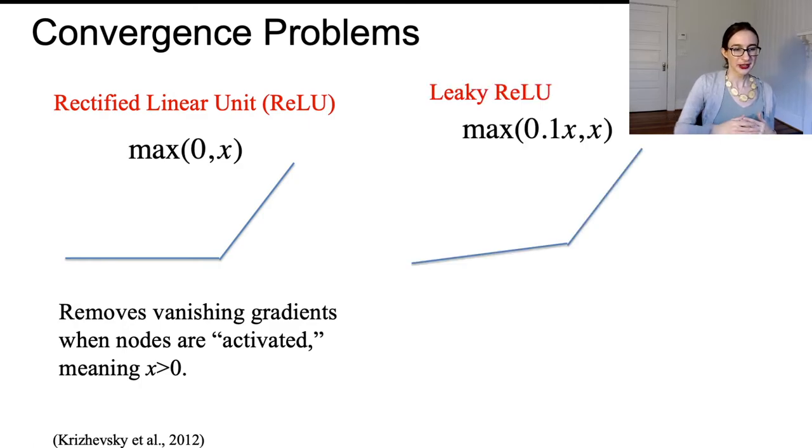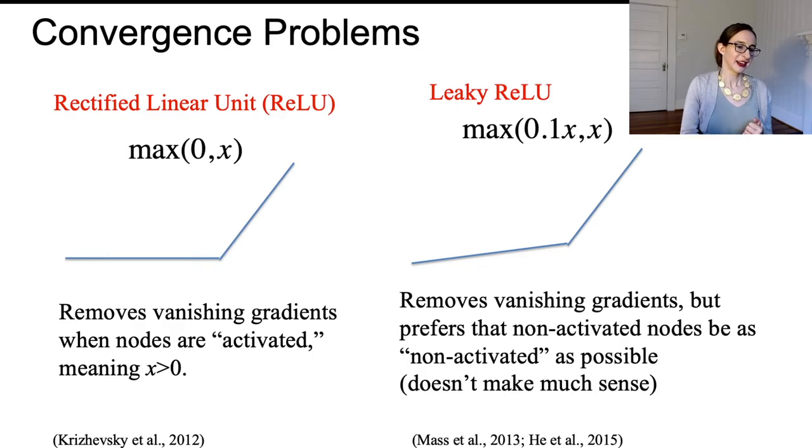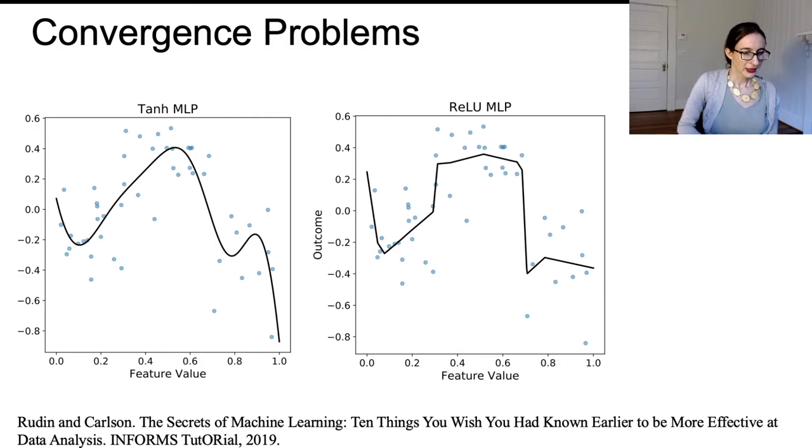You still have vanishing gradients when the nodes are not activated. That's where the leaky ReLU comes in, where you create this slight gradient. This completely loses the biological intuition because it's like saying that the non-activated nodes should be as non-activated as possible, which doesn't really make sense. The loss function there again doesn't make much sense, but it does create a gradient where there wasn't one before, so even though you're now optimizing something that doesn't exactly make sense, at least you're optimizing something and not staying put where you were.